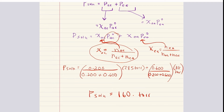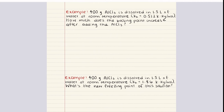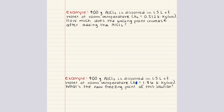Wonderful, that's how you solve this problem. Let's go ahead and tackle the next two. This problem says 400 grams of aluminum chloride is dissolved in 1.5 liters of water at room temperature. We're given the K_b value, which is the boiling point elevation constant, and we're asked how much does the boiling point increase after adding the aluminum chloride.